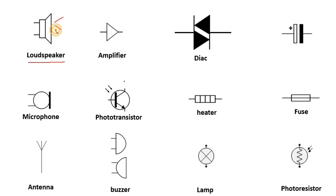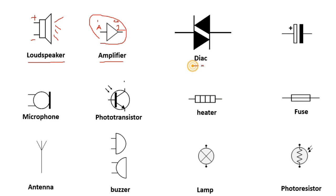This is the loudspeaker symbol — it has two terminals, always with plus and minus. This is the symbol of an amplifier, which also has two terminals: the input and the output. This is the symbol of a DIAC — we have here two diodes, the first diode and the second diode.